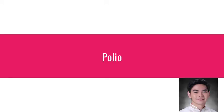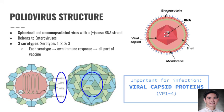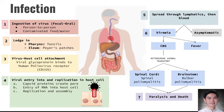Polio belongs to the enteroviruses. It is a spherical and unencapsulated virus with a positive sense RNA strand, and poliovirus has three serotypes. The viral capsid proteins VP1 to VP4 are important for the infection of polioviruses. For the pathogenesis, the virus enters the body through the fecal-oral route, either via person-to-person contact or through contaminated food or water. The capsid proteins create a pore into the host cell, the RNA enters, and replication and assembly occur. The virus spreads through the lymphatics, then to the blood, and later causes flaccid paralysis and muscle wasting due to denervation atrophy.